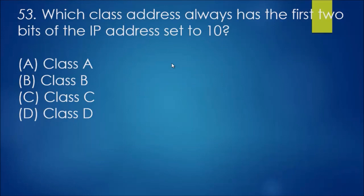Question 53: which class address always has the first two bits of the IP address set to 10? In this instance, class B always has the first two bits set to 10, so they range from 128 to 191.